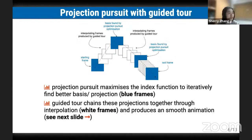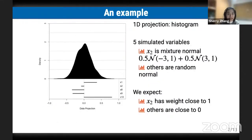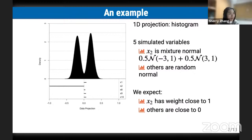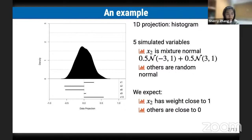Projection pursuit works with guided tours by iteratively finding better bases of projections. The guided tour chains these projections together through interpolation and produces a smooth animation. The data here includes five simulated variables — X2 is a mixed normal and all other four are random normal. We expect X2 to have a weight close to 1 and others close to 0 because X2 is the only informative variable. In this simple example, the optimizer works well to find X2.